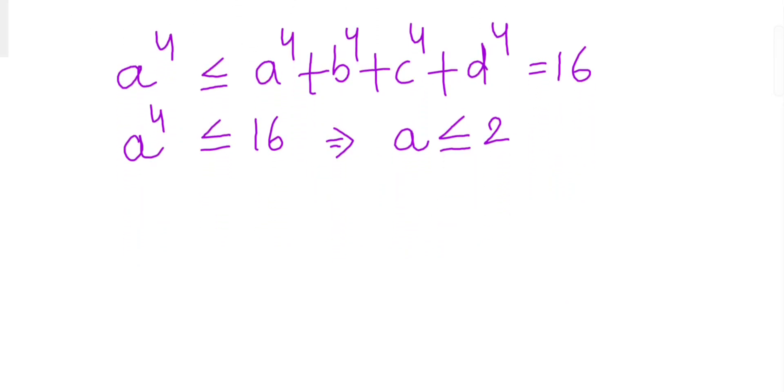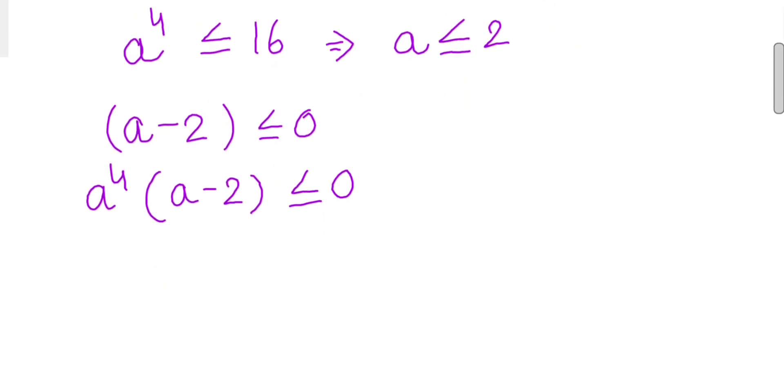Now if this is the case, then a minus 2 will be less than or equal to 0. And multiplying a⁴ on both sides will have this, and then opening the bracket we will get a⁵ minus 2a⁴ is less than or equal to 0.